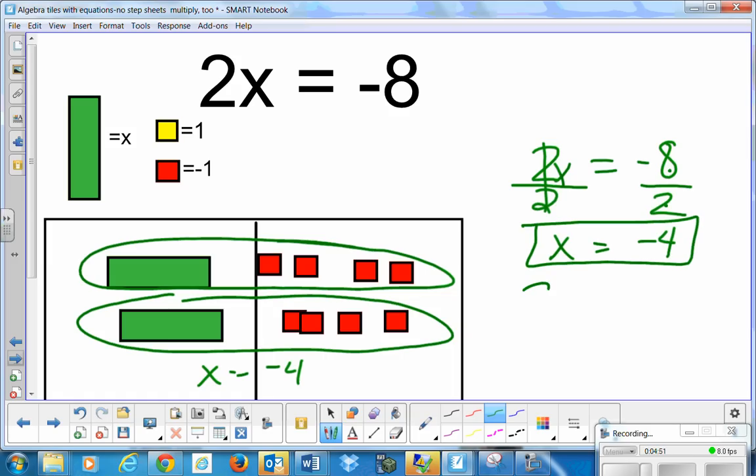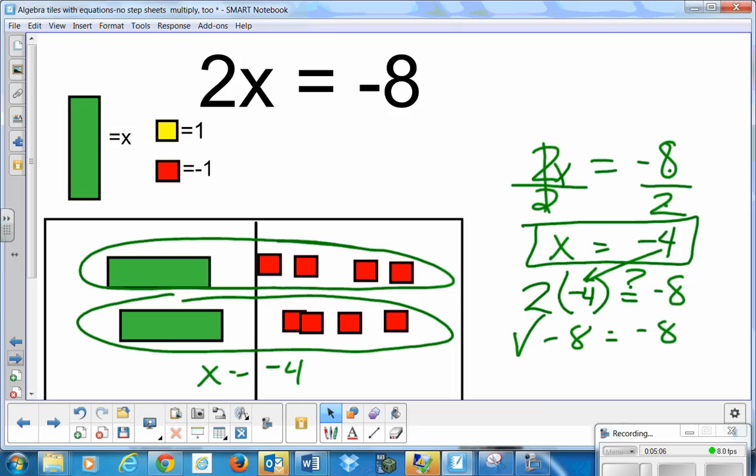My original problem was 2 times x is equal to negative 8. Instead of x, I'm going to put in negative 4 because I said it's equal to negative 4. And is that really equal to negative 8? And if negative 8 is equal to negative 8, it checks out. I solved that one correctly.